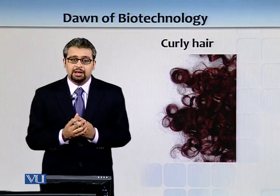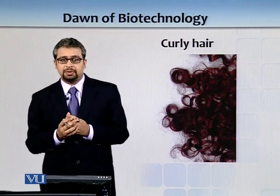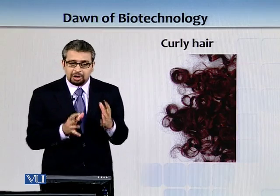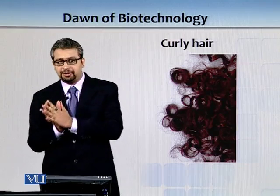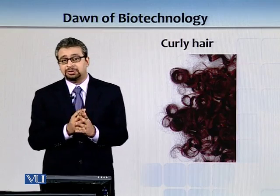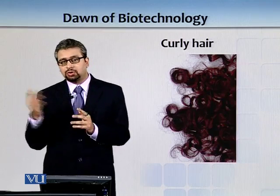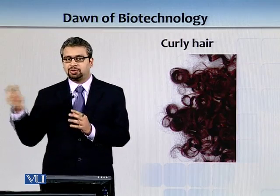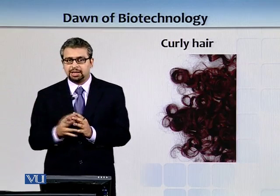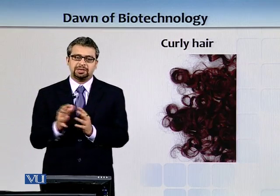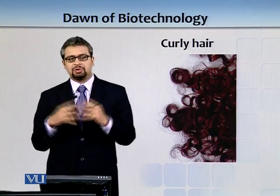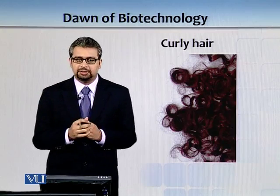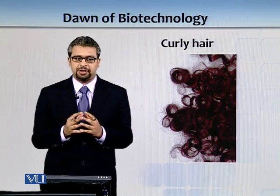We know that if a person has round hair follicles, they are going to have straight hair — pretty much the way most Asian communities, such as Chinese or Japanese, have round hair follicles and therefore straight hair.